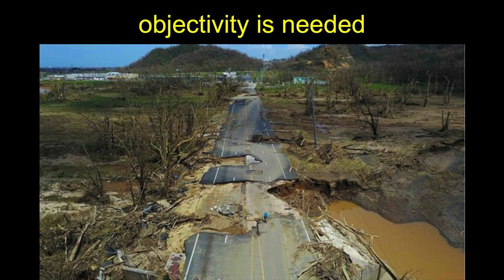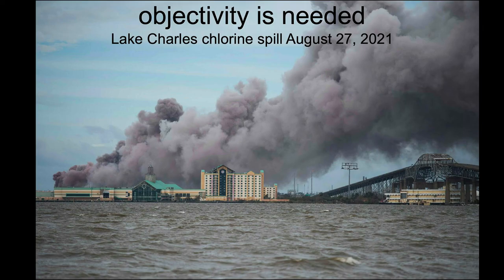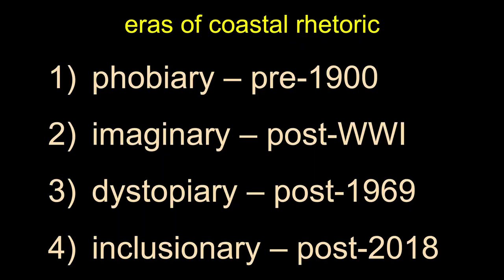That's why thinking about these things is really important. We need objectivity. Without it, we're not going to be able to solve these crises — in the wake of natural disasters or otherwise. Seeing clearly is a necessary skill for just and sustainable management of our coastal zone, whether in Texas, Louisiana, or wherever.